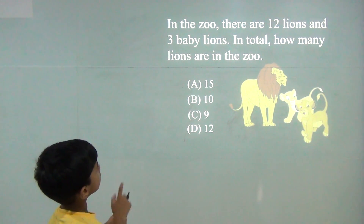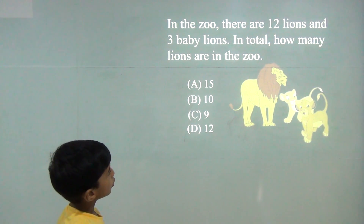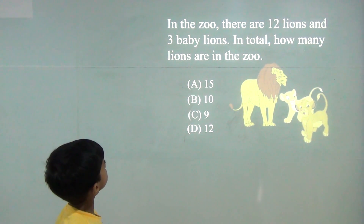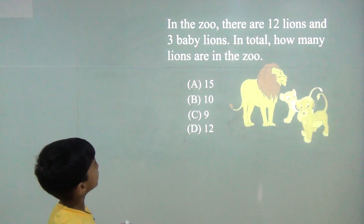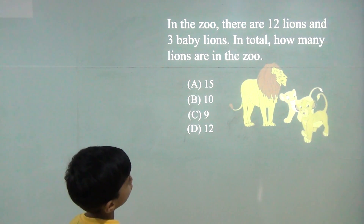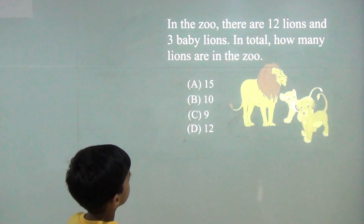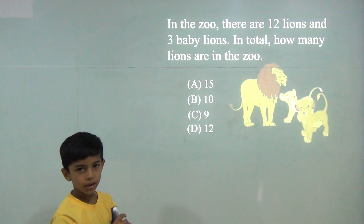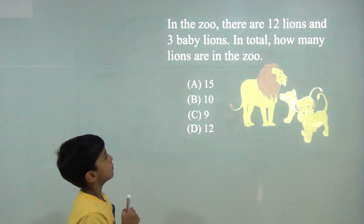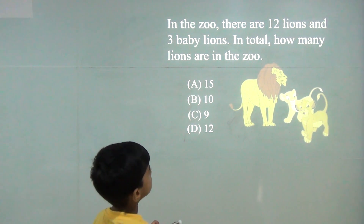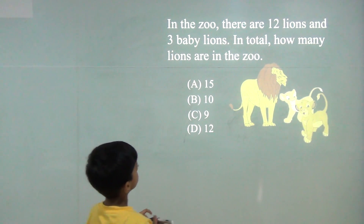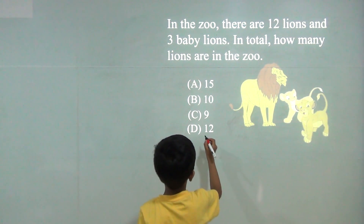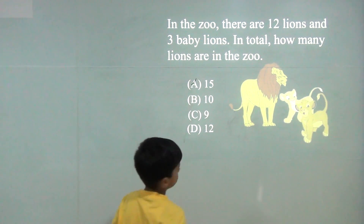In the zoo, there are 12 lions and 3 baby lions. In total, how many lions are there in the zoo? So we will do 12 plus 3 is 15. So the answer would be 15.